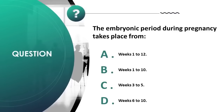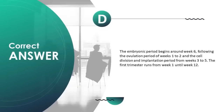The embryonic period during pregnancy takes place from: A) weeks 1 to 12, B) weeks 1 to 10, C) weeks 3 to 5, D) weeks 6 to 10. Correct answer is D. The embryonic period begins around week 6, following the ovulation period of weeks 1 to 2 and the cell division and implantation period from weeks 3 to 5. The first trimester runs from week 1 until week 12.